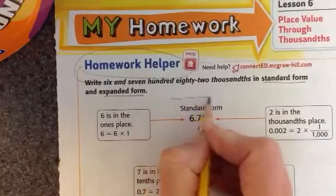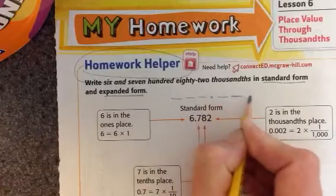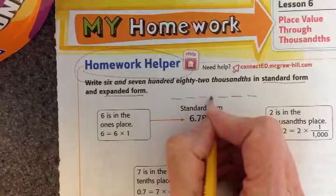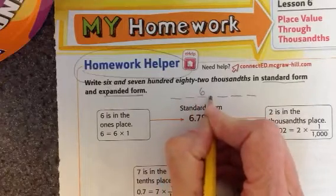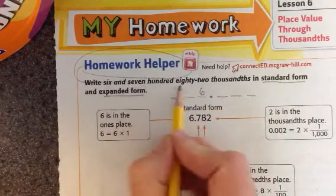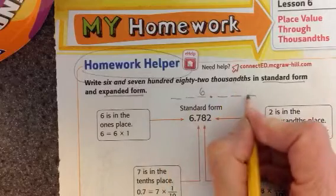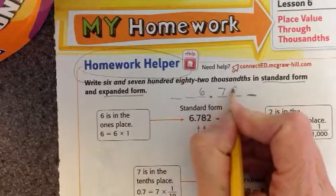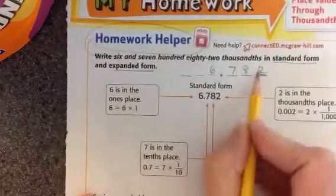Now you know I like to do this to give me a little frame to where to put the numbers. Six and, I know and means the decimal, six and seven hundred eighty-two thousandths. I know I need to go clear to the thousandths place. Seven hundred eighty-two thousandths, that's standard form.